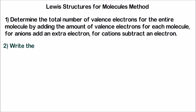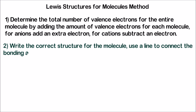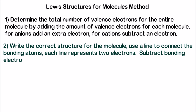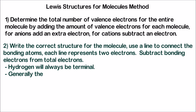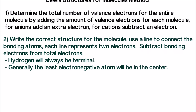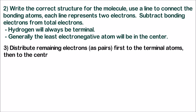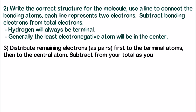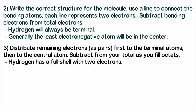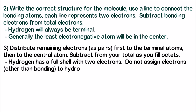Step 2: write the correct structure for the molecule. Use a line to connect the bonding atoms — each line represents two electrons. Subtract the bonding electrons used to make the lines from the total number of electrons. A few notes: hydrogen will always be terminal, and generally the least electronegative atom, other than hydrogen, will be in the center of the molecule. Step 3: distribute remaining electrons in pairs, first to the terminal atoms, then to the central atom. Subtract each pair from your total as you fill octets. Note that hydrogen has a full shell with just two electrons — do not assign any additional electrons to hydrogen.